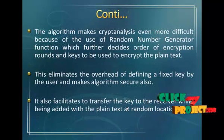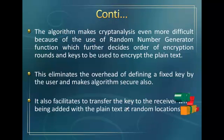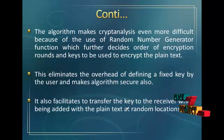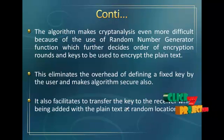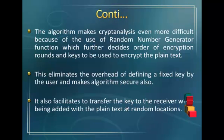The algorithm makes cryptographic events more difficult because of the use of random number generation functions, which further diversifies the encryption rounds and the key used for encryption of the plain text. In the random text accessing process, a random number is generated — this random number is the key entered by the user for securing the text. This eliminates the overhead of defining a fixed key.